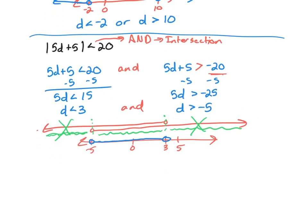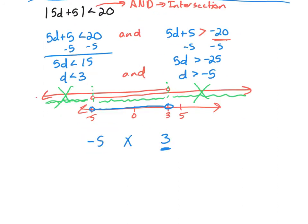My final inequality is x is between negative 5 and 3 — I always start with the smaller number. Remembering the alligator from elementary school: the alligator always opens toward the bigger number, which is 3. Both are open points, so no equal signs. The final solution is negative 5 is less than x, which is less than positive 3.